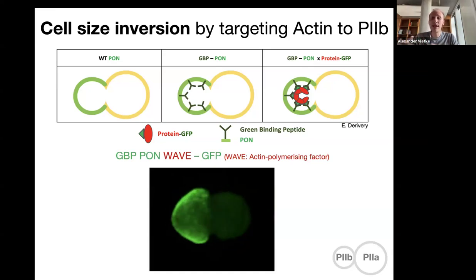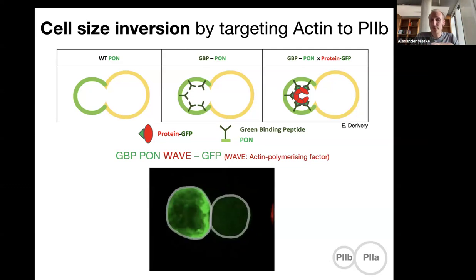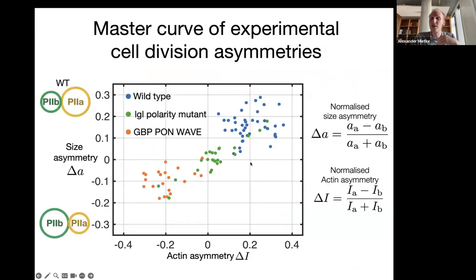This is exactly the kind of experiment that you have here. The cell is oriented in the same way as all the cells were that you saw before. This is a GBP-PON-WAVE. So it's an actin polymerizing factor that is now dominantly carried to the cell that would normally be the smaller one. You see indeed a really significant size inversion. Alicia played through several different perturbations of this kind, for example also ones that entirely eliminate the polarity. They're basically upstream of PON and the PAR system. And thereby, if you perturb them, you essentially do not set up polarity and thereby you don't set up actin asymmetry.